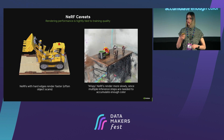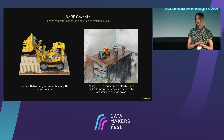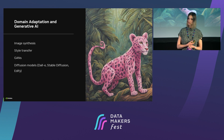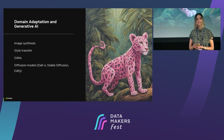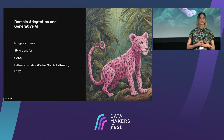Of course, NERF has some caveats. We've observed that reconstruction is usually faster if you have rigid structures with many sharp edges. For glossy objects, it takes a bit more time because we need to incorporate color. It also doesn't work really well with transparent or reflective objects. There is another technique to create synthetic data called domain adaptation, which relies on generative AI. You can use it to apply synthesis, style transfer, and GANs. GANs were used until recently, but now we are more in the diffusion era, using approaches like DALL-E, stable diffusion, and Edify.